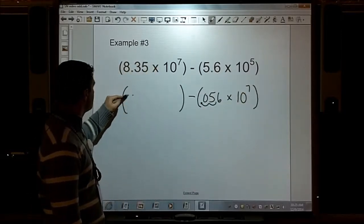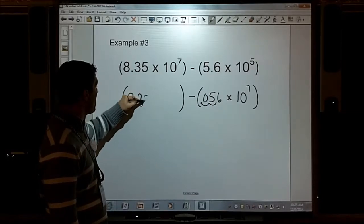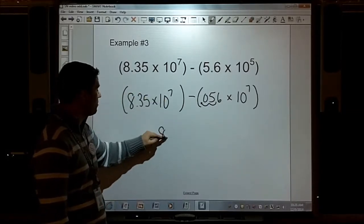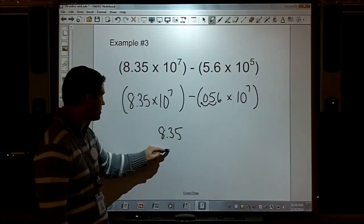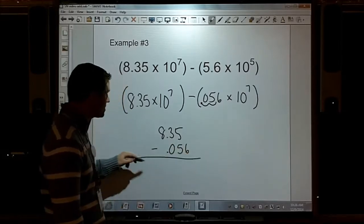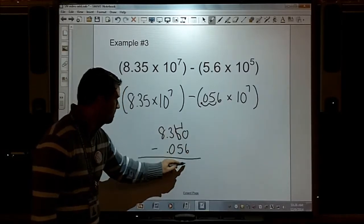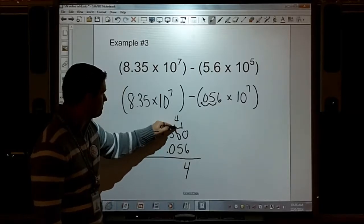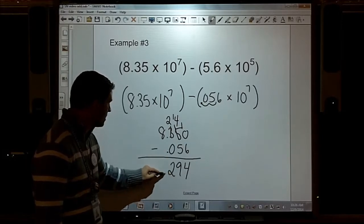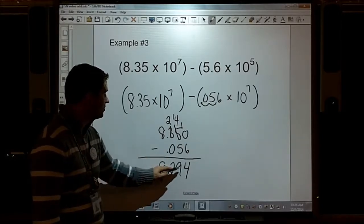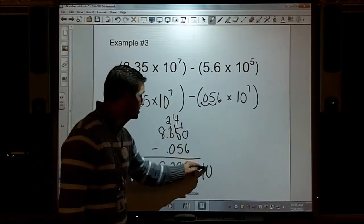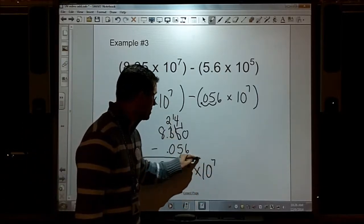This one already is times 10 to the seventh. Now, because they are the same, I can subtract them. 8.35 minus .056, that's 8.294 times 10 to the seventh.